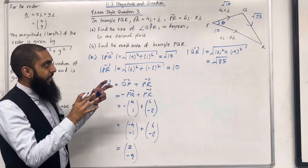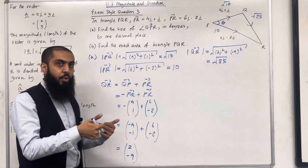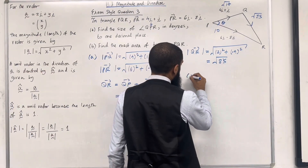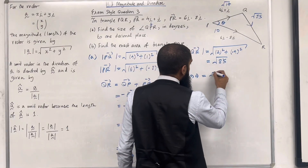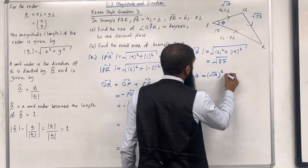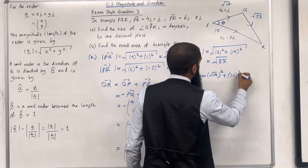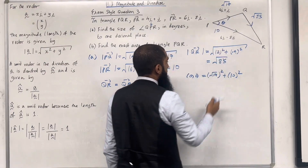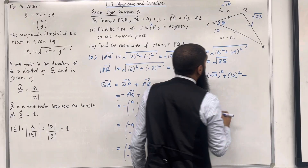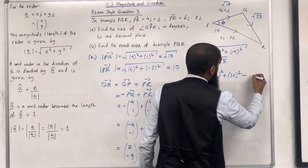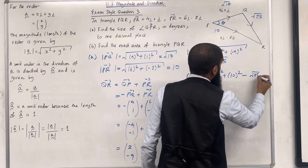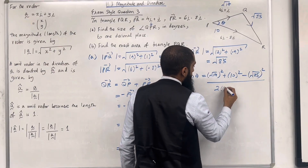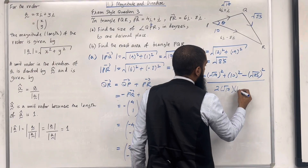Given three sides of a triangle, we can use the cosine rule to find the missing angle. Cos θ = (PQ² + PR² − QR²) / (2 × PQ × PR) = (√17² + 10² − √85²) / (2 × √17 × 10).